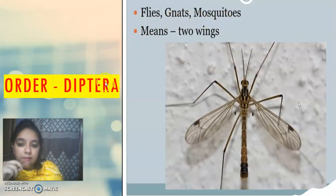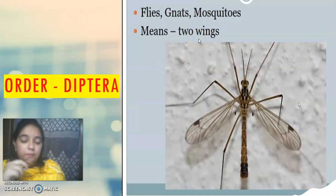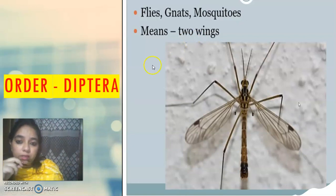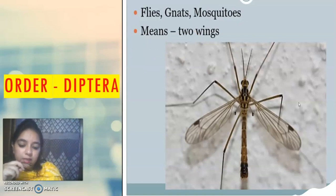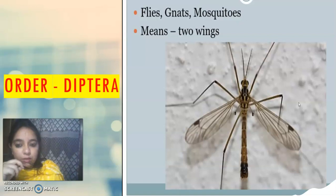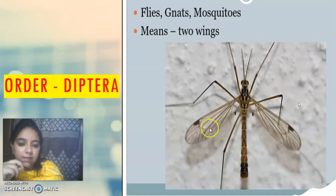Di means two, so this is a very important identification point of this order — any insect which has two wings is actually a dipteran, it is a fly. A true fly is a fly which has only two wings, that is one pair. So there is a modification of the hind wing, which we will see in the next slides. The wings you can see are the forewings and they are totally membranous wings.